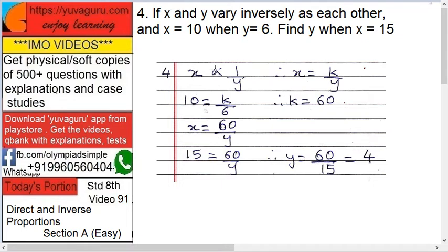Here, X varies inversely as Y. So X, this proportion sign, 1 upon Y. Bring constant in. Therefore, X equals K upon Y. K is a constant.